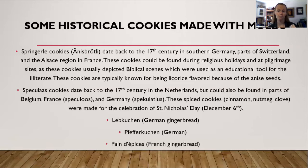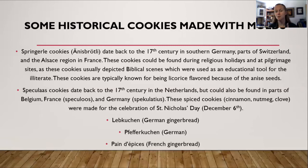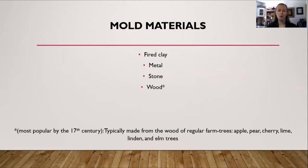Lebkuchen is German gingerbread. There's also Pfefferkuchen, which is German gingerbread but with peppers rather than ginger, and French gingerbread. So to recap, we have cookies made with either anise seed, or cinnamon, nutmeg and clove, or ginger, or pepper — just depending on the different spices. With the Netherlands, part of the reason these cookies became popular with cinnamon, nutmeg, and clove is likely due to the trade route with the Dutch East India Company.